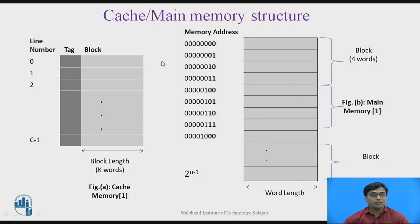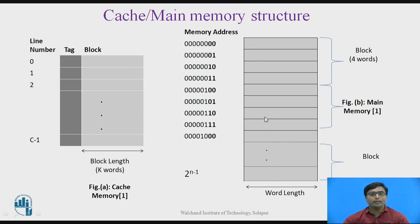Looking at the Cache and Main Memory structure: assume this is the Main Memory structure and this is the Cache Memory structure. Main Memory is divided into an equal number of words, and the size of each word is the same. We assume the size of each word is 1 byte. The memory is divided into the number of words, and again this memory is divided into blocks. In this lecture, we assume 1 block equals 4 words. Each block contains 4 memory words.